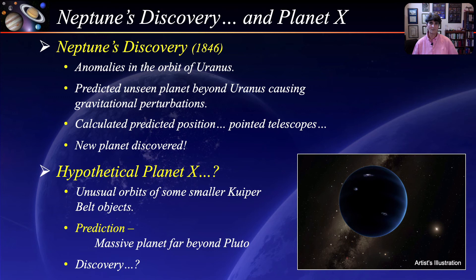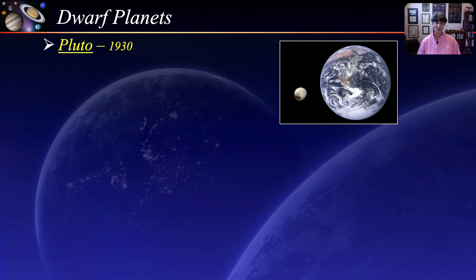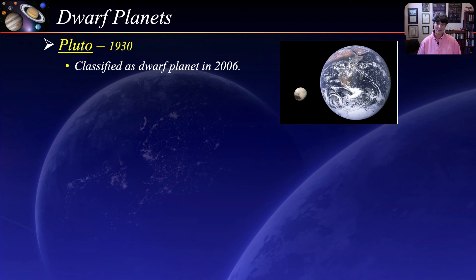Dwarf planets are a new category of solar system objects introduced in 2006 by the International Astronomical Union. Pluto is now classified as one of these bodies. Pluto was discovered in 1930 by the American astronomer Clyde Tombaugh and until the official classification was considered the ninth planet. By definition, Pluto was classified as a dwarf planet in 2006 because it had not cleared the neighborhood of its orbit. Pluto is named after the Roman god of the underworld, and its name was suggested by an 11-year-old British schoolgirl.